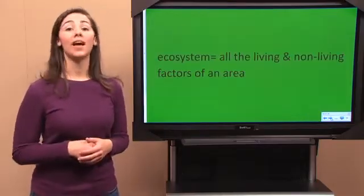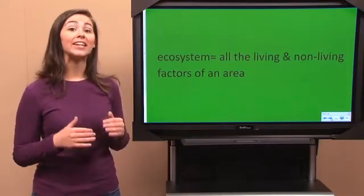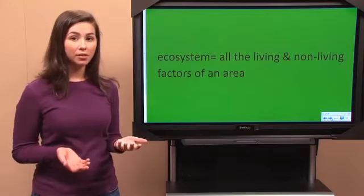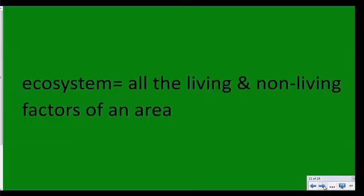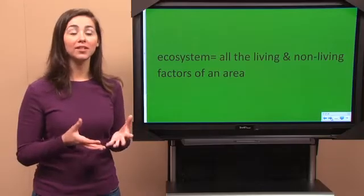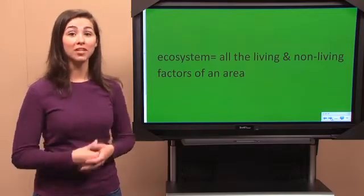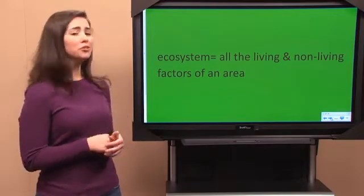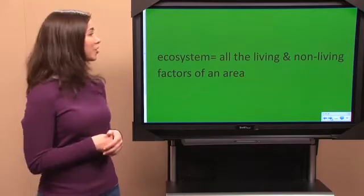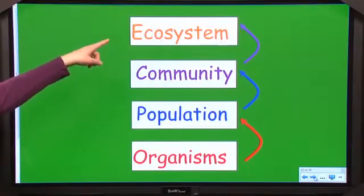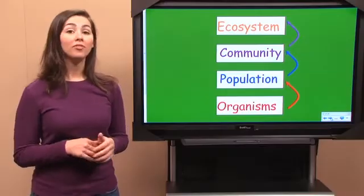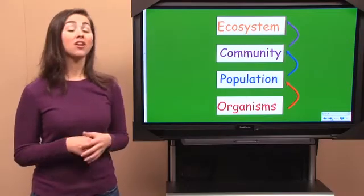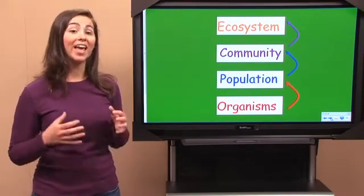Now, there's one last level of ecology — that's an ecosystem. An ecosystem is a collection of all the communities in the area, but it's not only that. It's not just the living communities; it's also the non-living factors of the area that make up the ecosystem. Ecosystems usually take up a lot of space, so we're going to put that at the very top. The living parts of an ecosystem are called the biotic factors. The non-living components are called the abiotic factors.